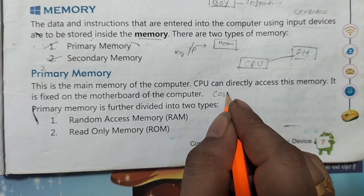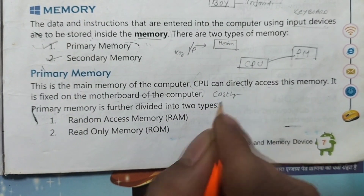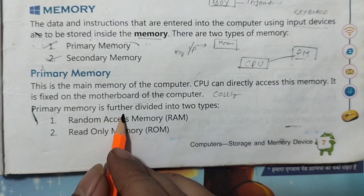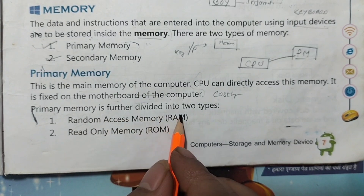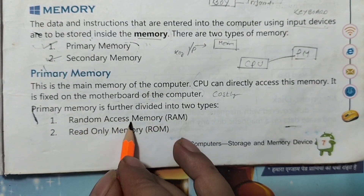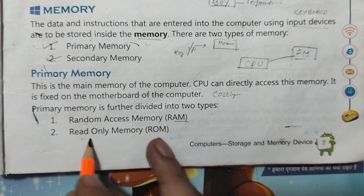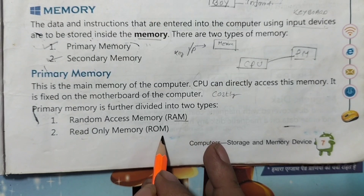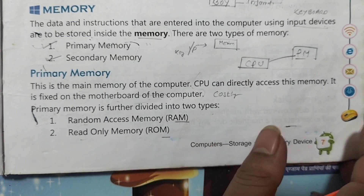Primary memory is further divided into two types: Random Access Memory (RAM) and Read Only Memory (ROM).